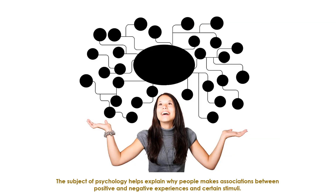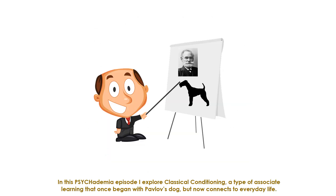The subject of psychology helps explain why people make associations between positive and negative experiences and certain stimuli. In this Psychedemia episode, I explore classical conditioning — a type of associative learning that once began with Pavlov's dog, but now connects to everyday life.